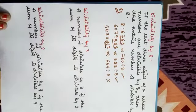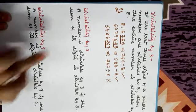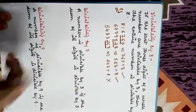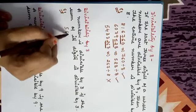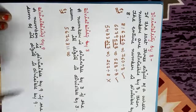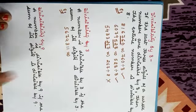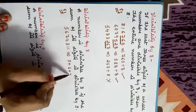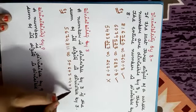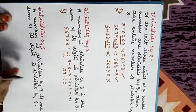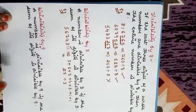Divisibility by 3: A number is divisible by 3 if the sum of its digits is divisible by 3. For example, take the number 5,67,4311. We add all the digits: 5 + 6 + 7 + 4 + 3 + 1 + 1 = 27. Is 27 divisible by 3? Yes. So that means this number is also divisible by 3.